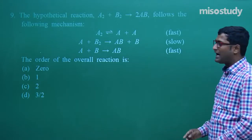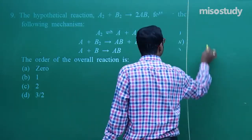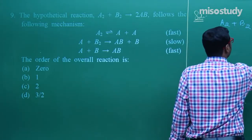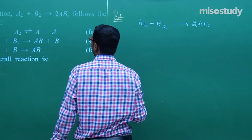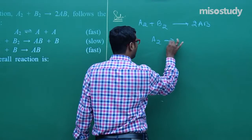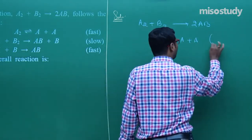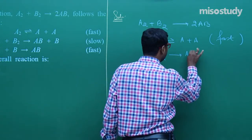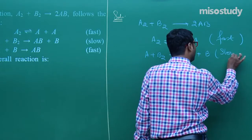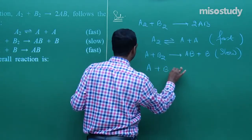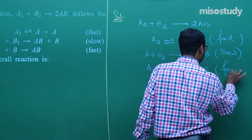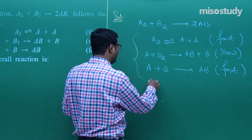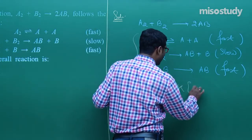Question number 9: the hypothetical reaction A₂ + B₂ → 2AB follows this mechanism: Step 1 — A₂ → A + A (fast); Step 2 — A + B₂ → AB + B (slow); Step 3 — A + B → AB (fast). The slow step is the rate-determining step, so rate = K[A][B₂].